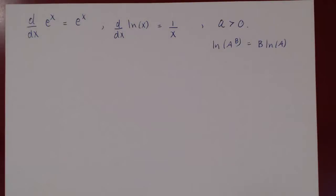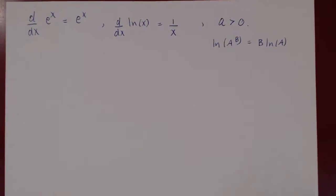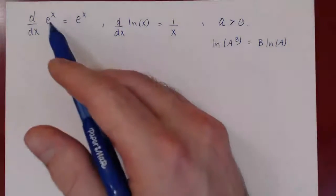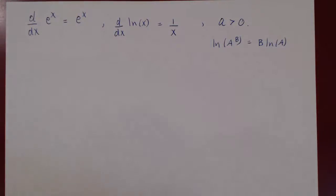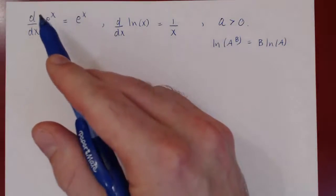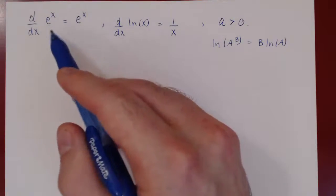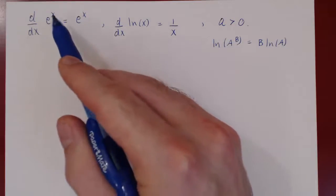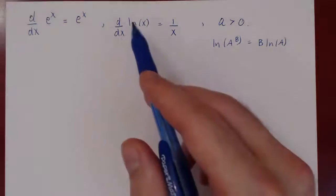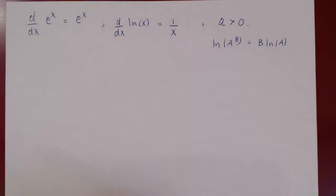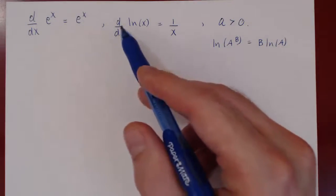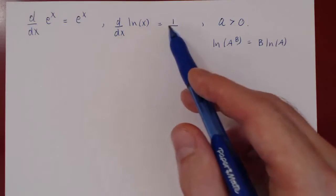In this video, we want to find the derivative of any exponential function and any logarithmic function. We have the very special exponential function base e. e was roughly 2.71828, an irrational number, but it has a unique property: the derivative of e to the x is e to the x. ln of x is the log base e function, which is the inverse of e to the x, and the derivative of ln of x is 1 over x.